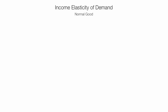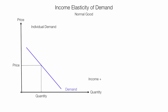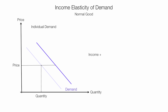Up first is income elasticity of demand of a normal good. Along the x-axis, I put quantity of some good, and up the y-axis, the price of a good, and the demand curve. Imagine an individual consumer is at that price and that quantity — we're talking about individual demand, not market demand. If the individual's income rises, demand will increase and shift out. The consumer still sees the same price, and they can buy all they want at that price, but the quantity they consume increases.